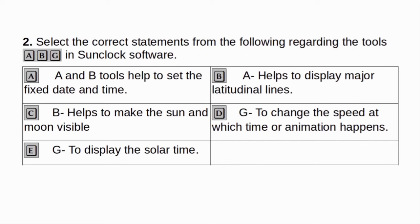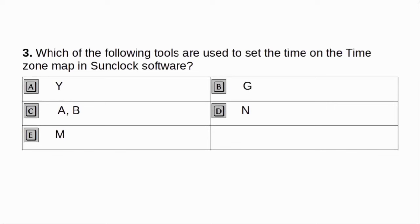Select the correct statement from the following regarding the tools A, B, G in SunClock software. A. A and B tools help to set the fixed date and time. B. A helps to display major latitudinal lanes. C. B helps to make the sun and moon visible. D. G - to change the speed at which time or animation happens. E. G - to display the solar type. Answer: A and D.